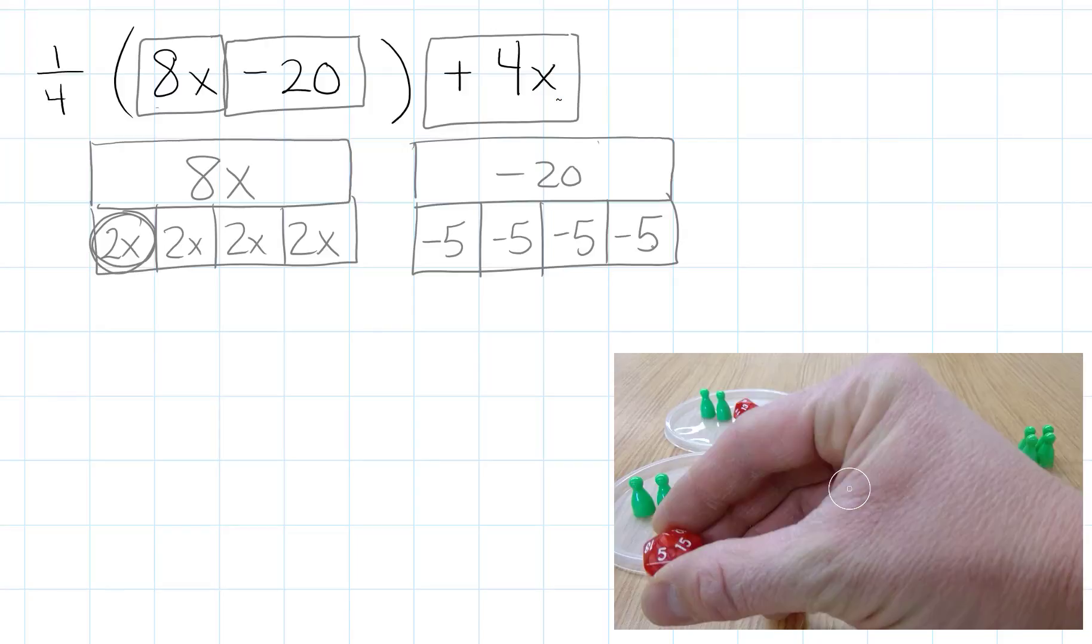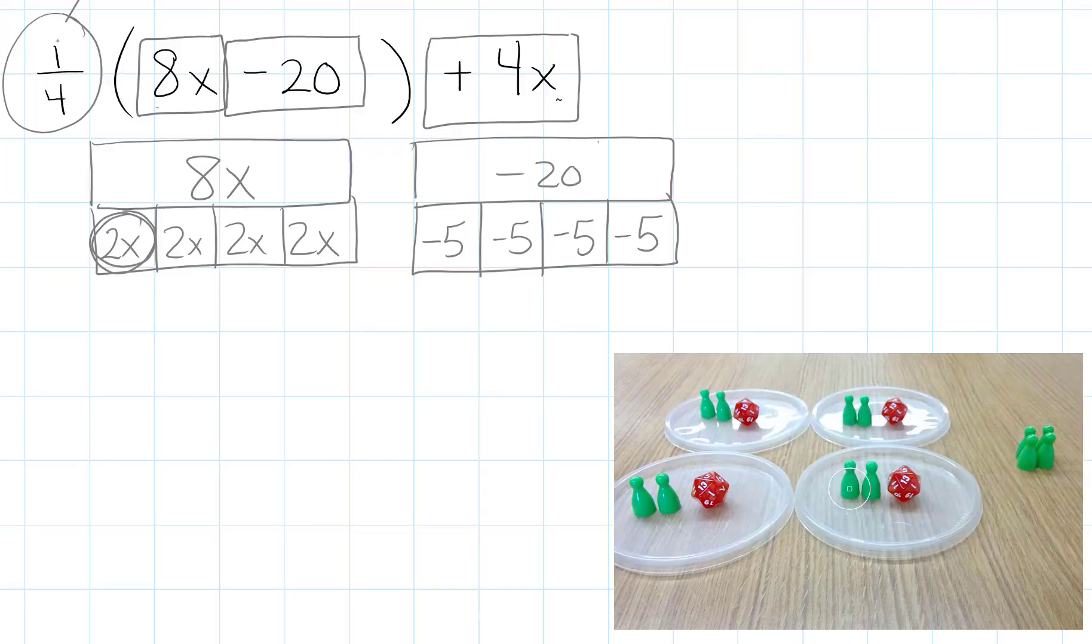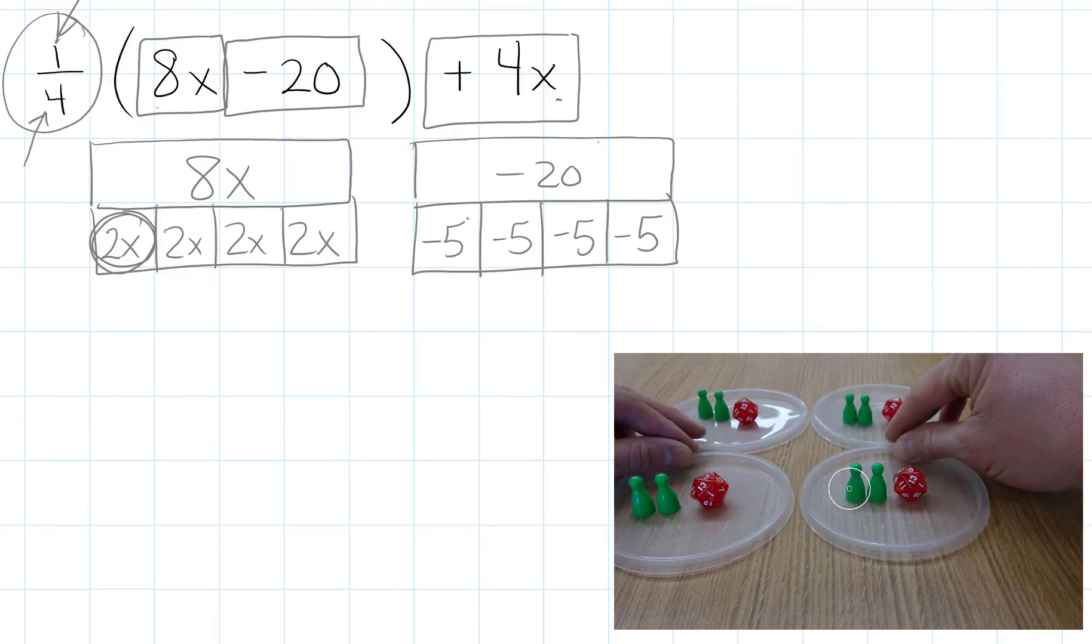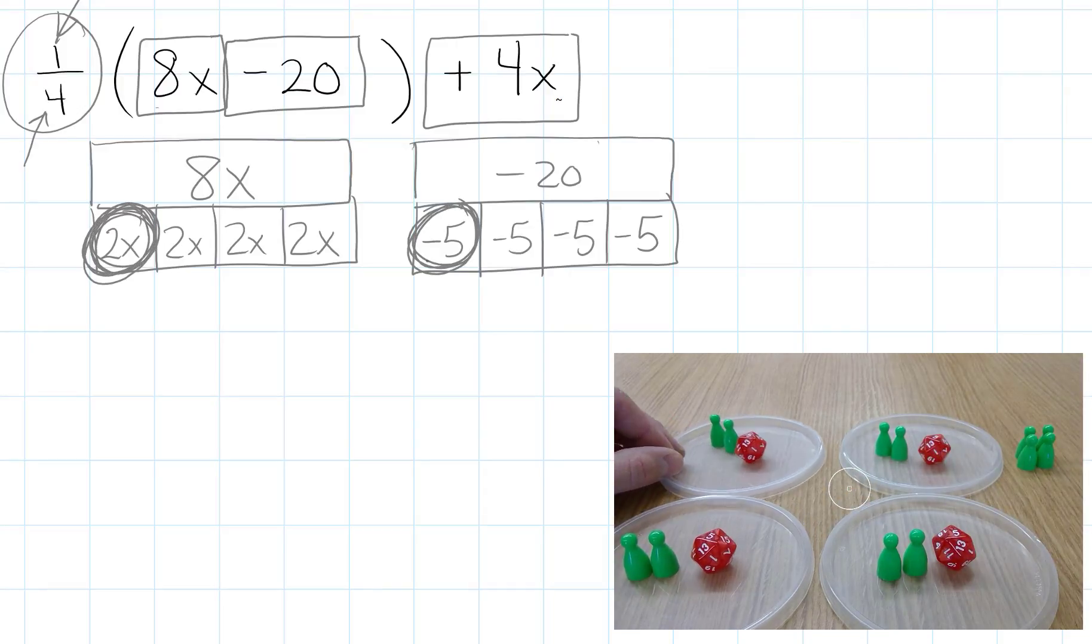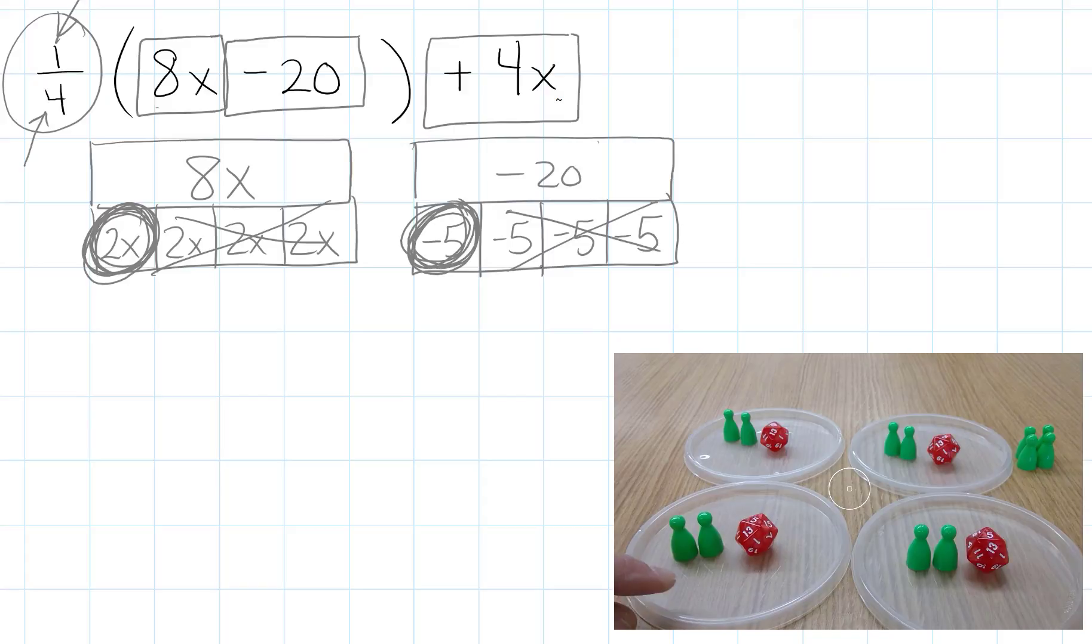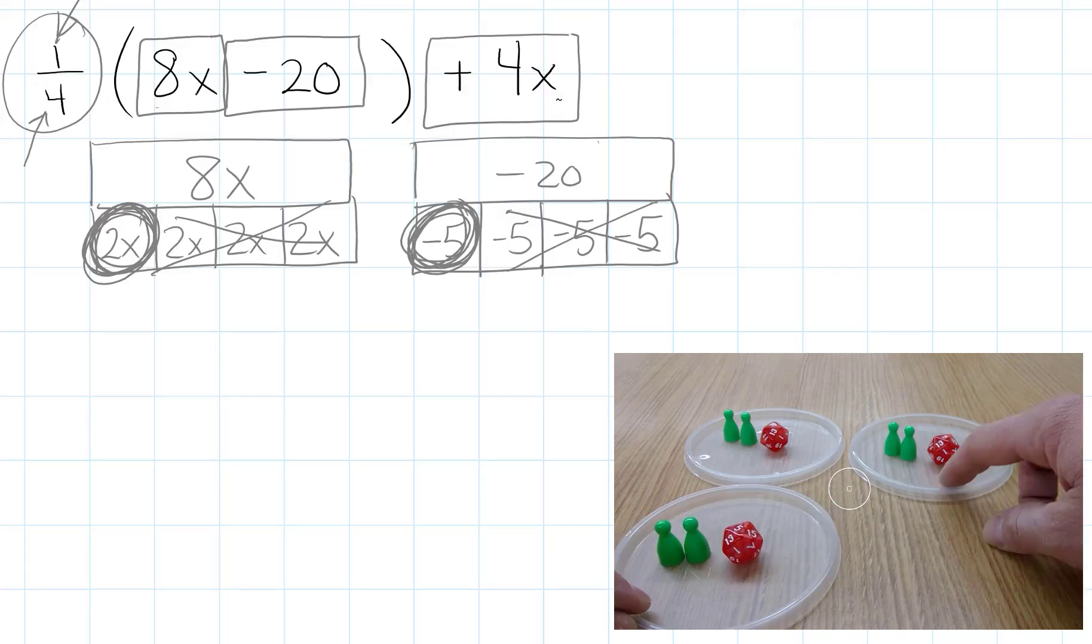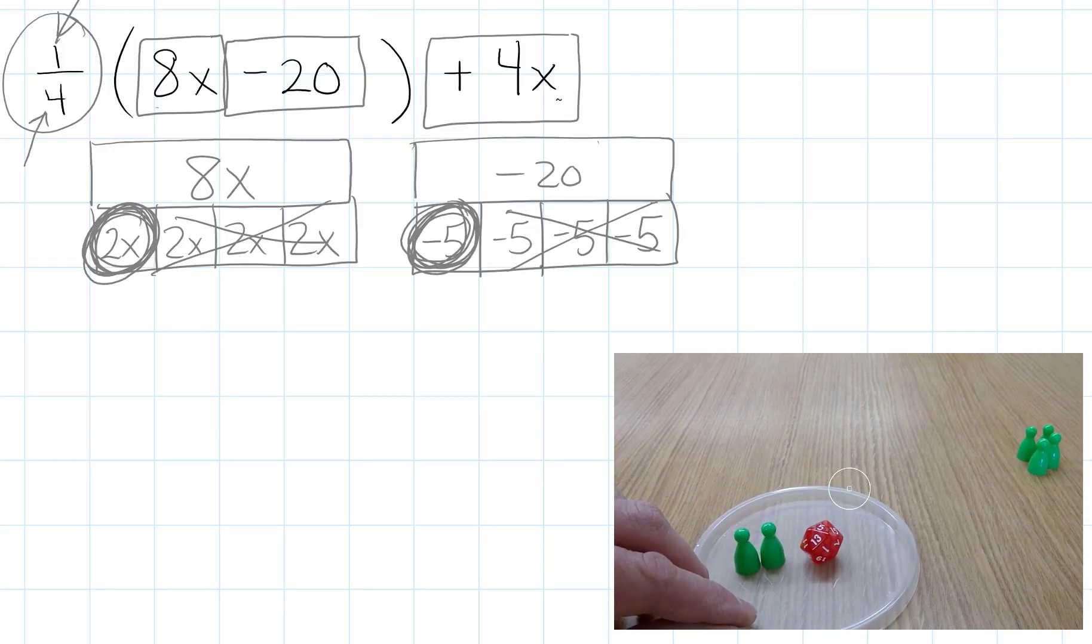And what you guys are going to see is the 1 fourth is telling us that we only want 1 out of the 4 sections. And so that's why I circled 2x at the beginning here. 1 of these sections and 1 of these sections. The other 3 are going to get taken away. We're going to take those 3 sections away.